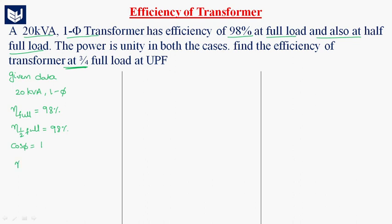We have to find the efficiency of the transformer at 3/4 full load at unity power factor. For that, what we will do is, initially we have to find the iron losses and copper losses.